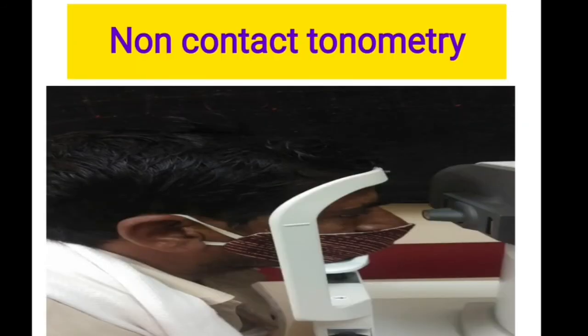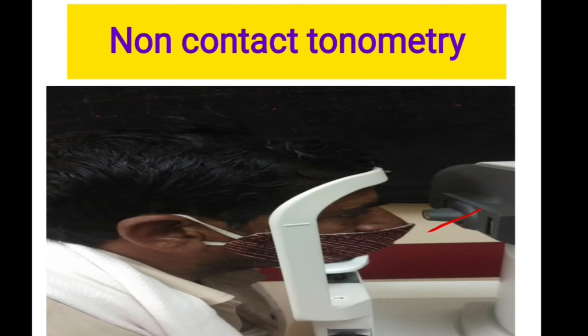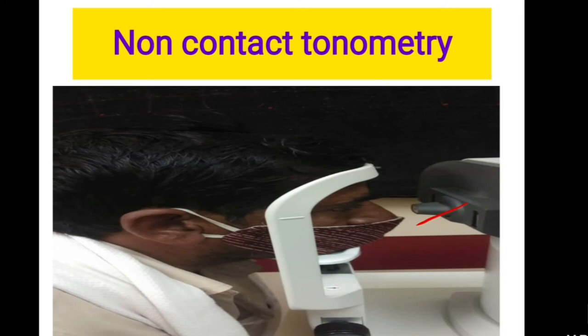Non-contact tonometry (NCT): the patient positions their chin and head against the instrument. An air puff is produced from the machine, which deforms the cornea. The machine measures the time or force of the air puff required to create a standard amount of corneal deformation. It is based on the principle of applanation tonometry. Main advantage: used for screening because it is fast and requires no anesthetic agent. Disadvantages: in eyes with very high or very low IOP, readings may not be accurate.